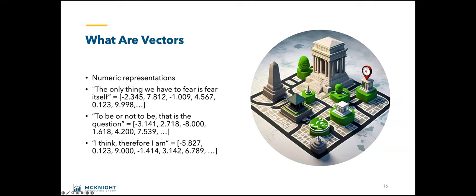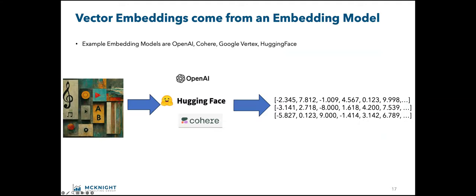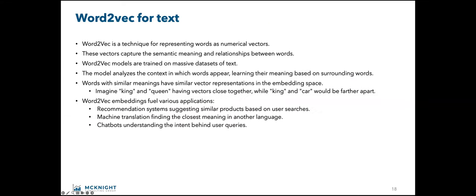How do you produce these vectors? There are different embedding models — OpenAI, Cohere, Google Vertex, Hugging Face. You produce vector embeddings by sending data through an embedding model — a machine learning model that you can get from OpenAI or any of these providers. It turns your data into vectors. You take a set of unstructured data, send it through the model, and it returns an embedding to you. It's really not that confusing — just reduce everything to numbers and then deal with it there.